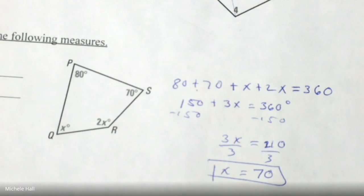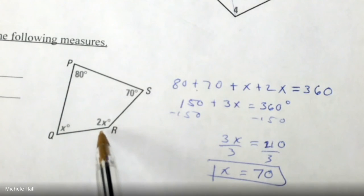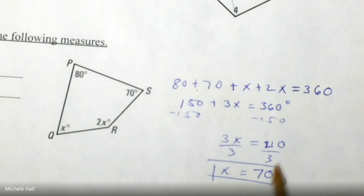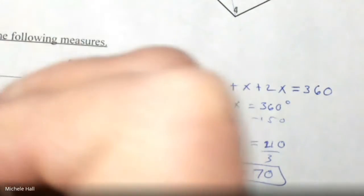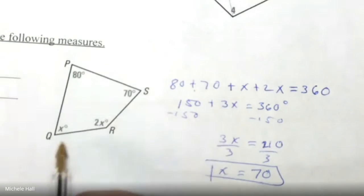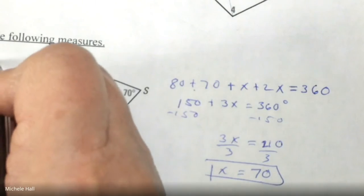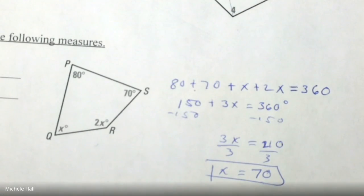We're not done yet — we still need the actual angle measures. Angle R is 2 times x, and x is 70, so R equals 2 times 70, which is 140 degrees. Angle Q equals x, and x is 70, so Q equals 70 degrees.